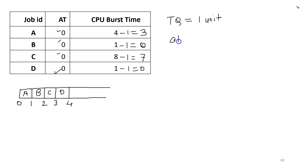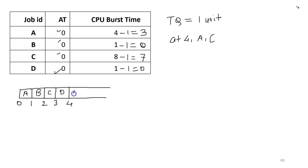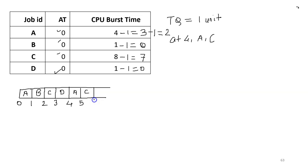At time four, there are only two processes remaining: process A and process C. After D, process A will get the CPU for a time quantum of one unit; total time becomes five. Then C will get the CPU for a time quantum of one unit; total time becomes six.